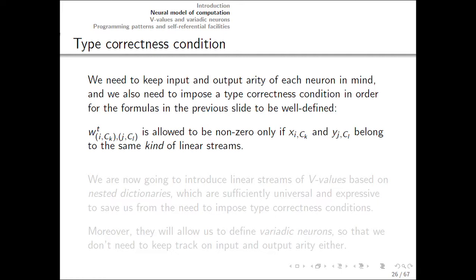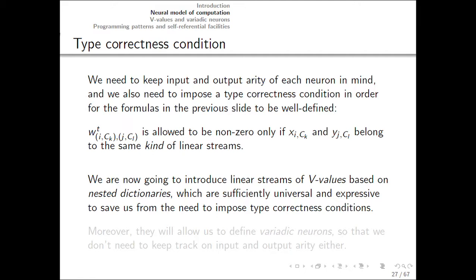So we have to keep track of input and output arities and also impose a type correctness condition that non-zero matrix elements are only allowed to connect wires carrying the same kind of linear streams. This is a bit annoying that we need to do all this. So we introduce linear streams of vector-like values based on nested dictionaries. And that will be sufficiently powerful that we can build dataflow matrix machines along a single kind of linear stream. So you don't need to worry about the type correctness condition after that. And moreover, as an added benefit, this particular kind of linear streams allows us to define variadic neurons with flexible number of inputs and outputs. So we wouldn't need to keep track of the input and output arities either.